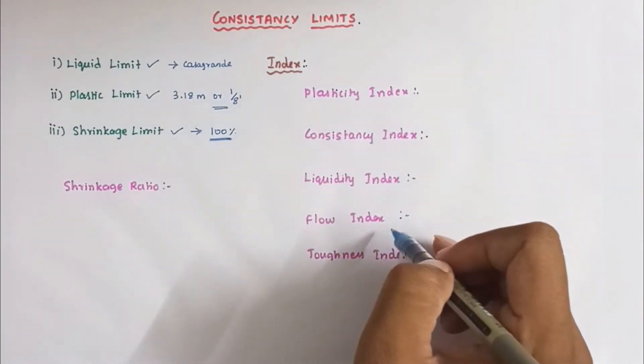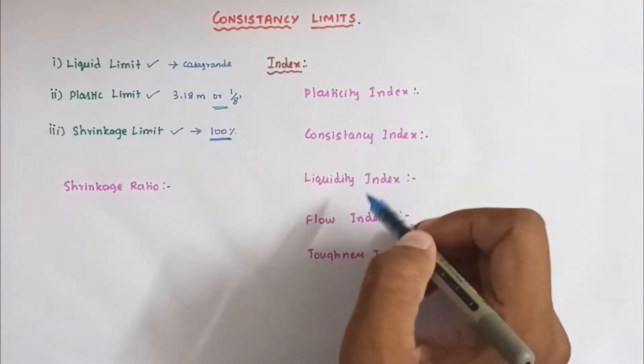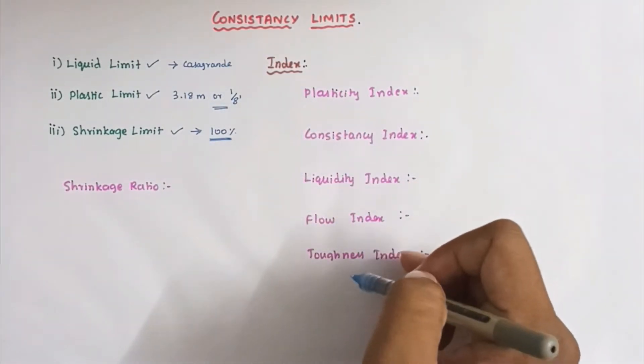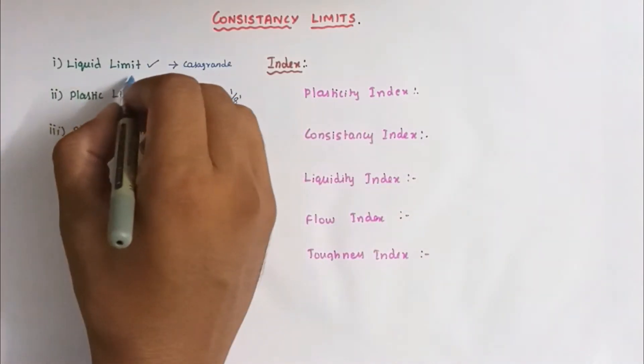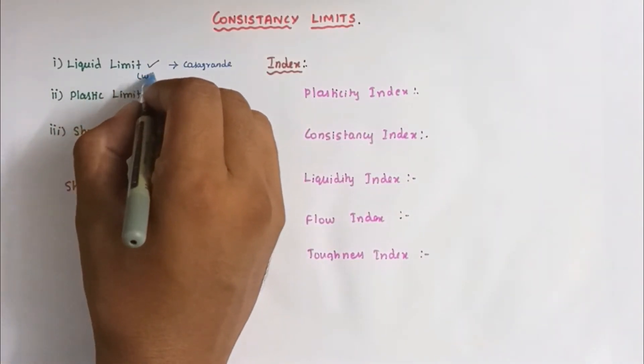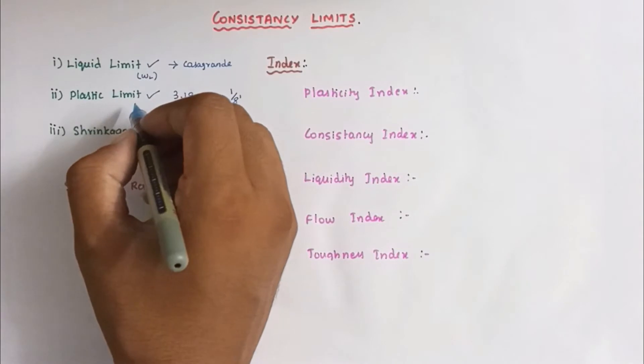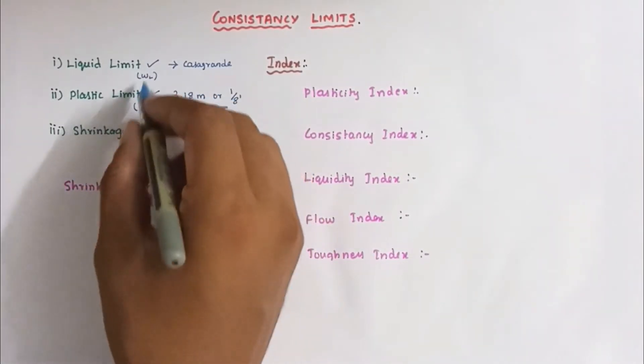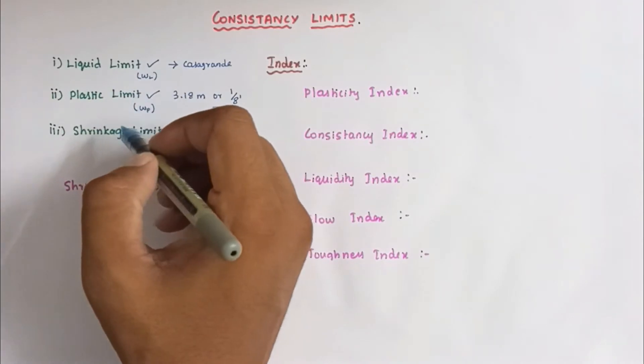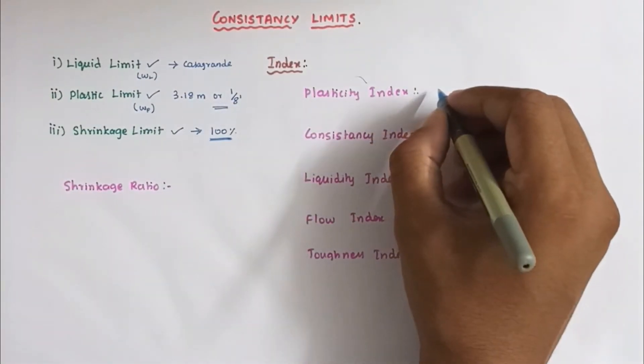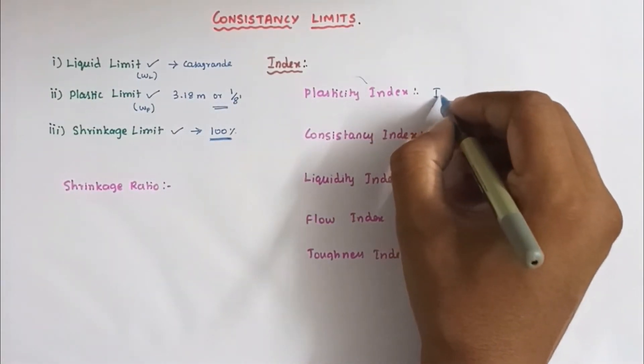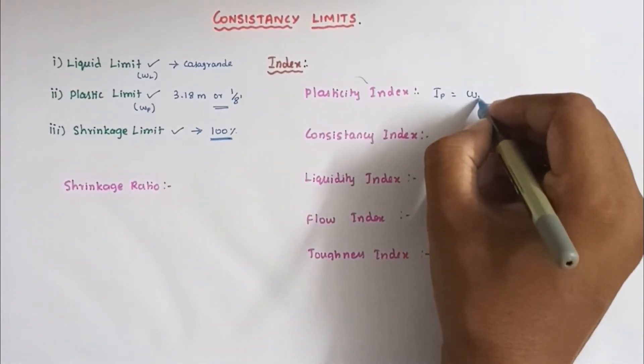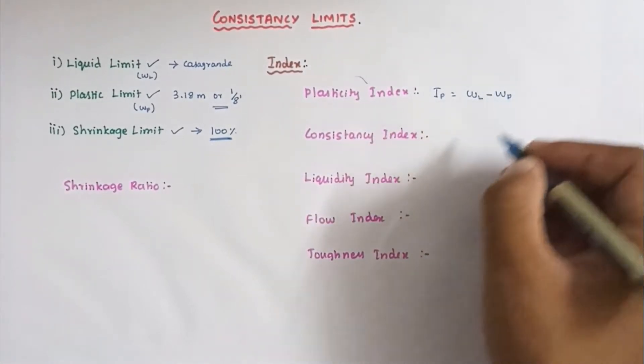From those limits we can find out various indices: plasticity index, consistency index, liquidity index, flow index, and toughness index using the formulas of liquid limit WL and plastic limit WP. First is the plasticity index. Plasticity index IP equals liquid limit minus plastic limit.